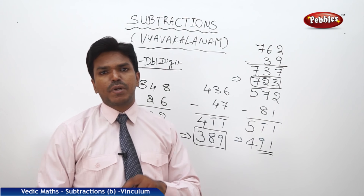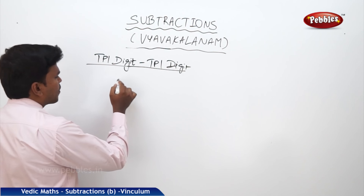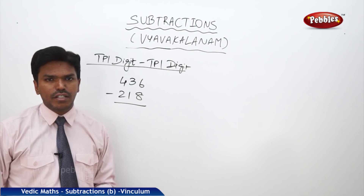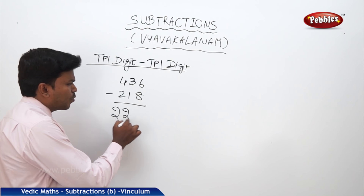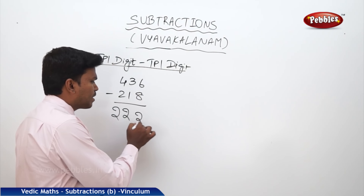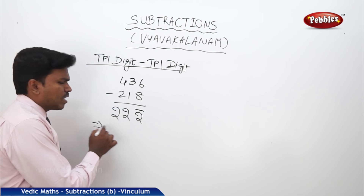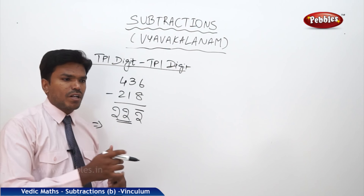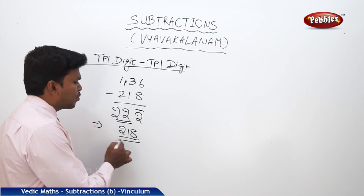Now triple digit minus triple digit — the same approach. Example: 436 minus 218. 4 minus 2 equals 2; 3 minus 1 equals 2; 6 minus 8 not possible, so 8 minus 6 equals 2 bar. We have 22, 2 bar. Reduce 22 by 1 to get 21, and complement of 2 is 8. Answer: 218.